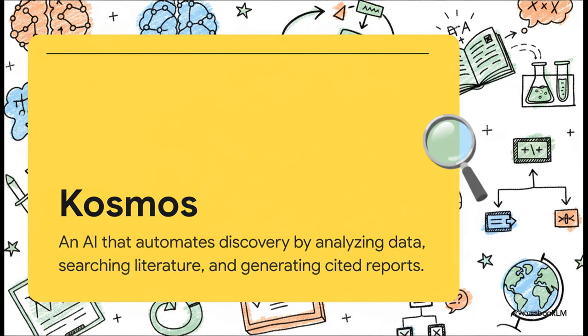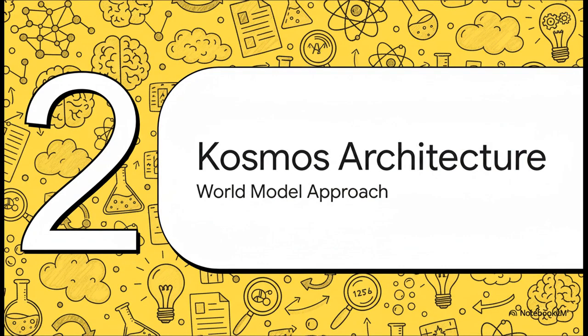The system is designed to automate these discovery cycles autonomously. The primary objective is to accelerate the pace of scientific discovery. Now, what distinguishes Cosmos from prior systems?